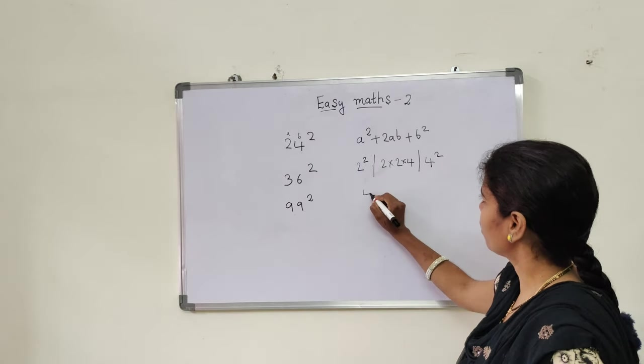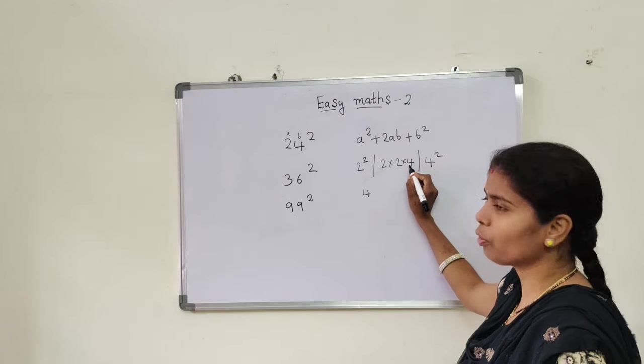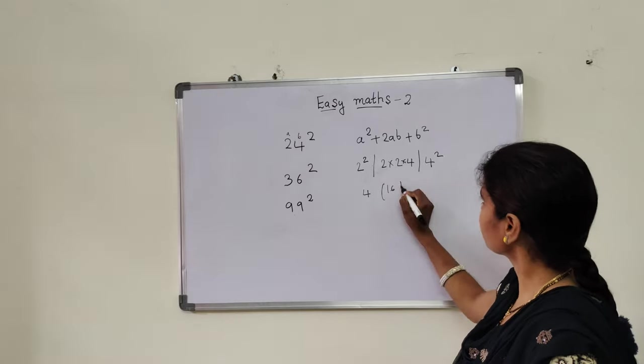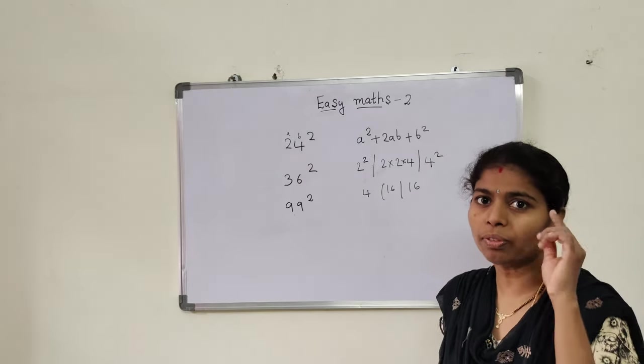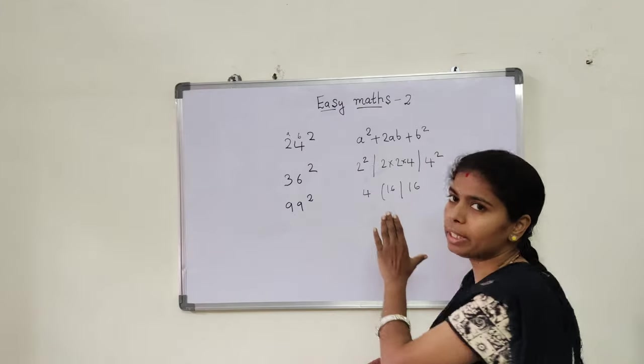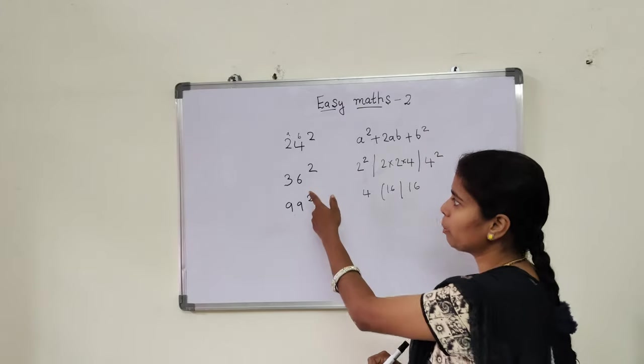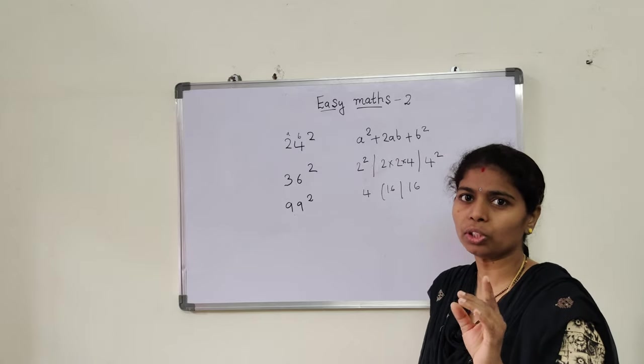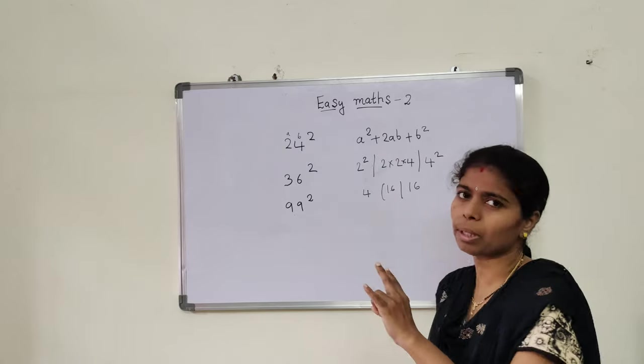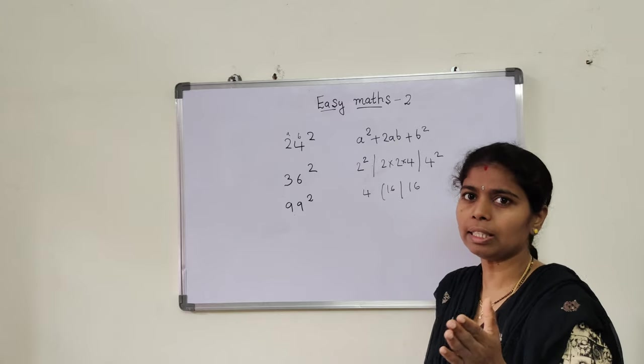Now, what is 2 square? 4. 2 into 4 is 8. 4 square is 16. For you to understand only I am doing this much detailed process. Later, I am going to explain very easily. To understand how I am doing, I am not going to give you one step; 1, 2, 3 steps I am doing. Next problem I will explain easily.